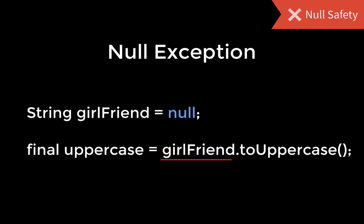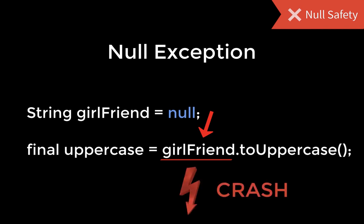Because languages like Dart support null, it can also lead to null exceptions. In this case, the girlfriend variable is null and we cannot execute a method on a null value. This leads to a crash of your application, and the end user will not be happy about it.